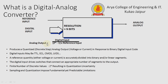The formula used is: analog output equals digital input divided by 2 raised to the power n, minus 1, multiplied by the reference input. The digital input connects an appropriate number of segments to the output with a finite number of discrete values, such that 2 raised to n results in quantization uncertainty.